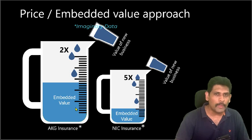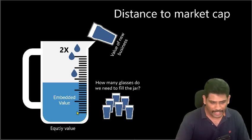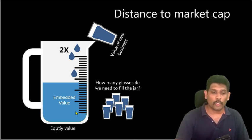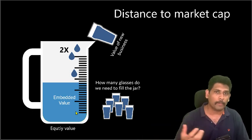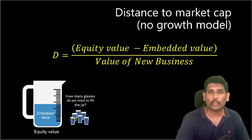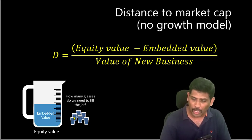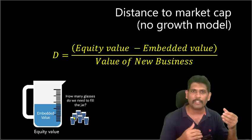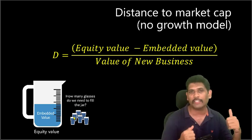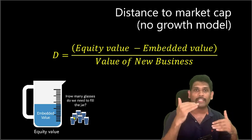This is where I have come up with my proprietary metric called distance to market cap. Metaphorically speaking, the distance to market cap is simply how many glasses you need to fill up this metaphorical jar — in other words, how many years would it take if you generate the same value of new business over time to fill up this jar. The first model is a no-growth model, where we assume the value of new business remains constant. The formula is straightforward: take the equity value, reduce the embedded value to find the gap, and divide it by the value of new business earned during the year. That gives you the number of years it would take for embedded value to reach the current market value.